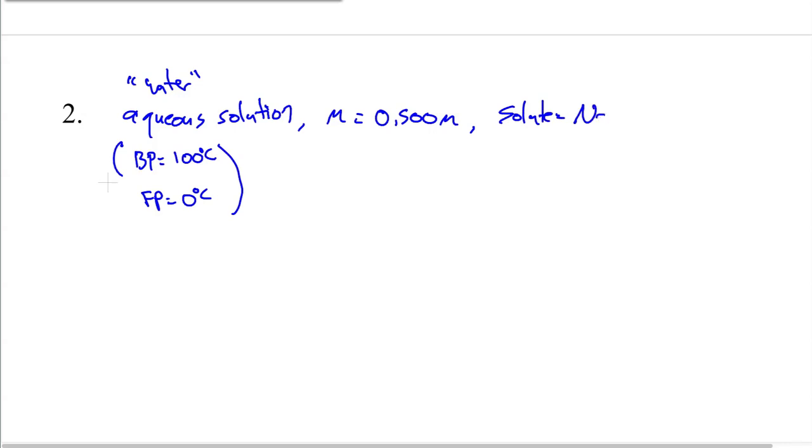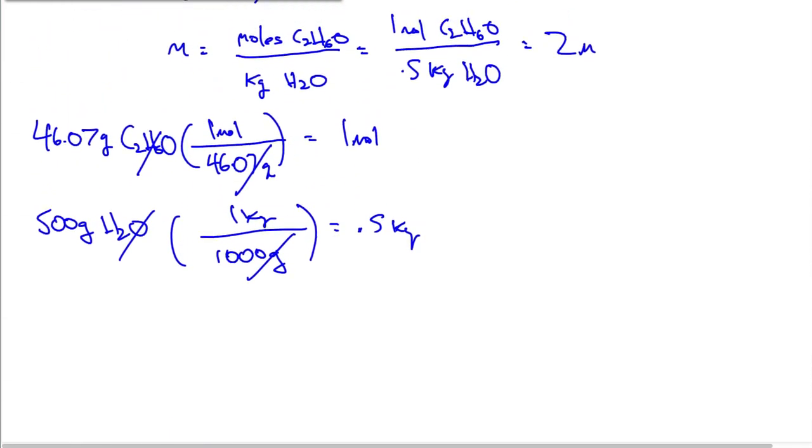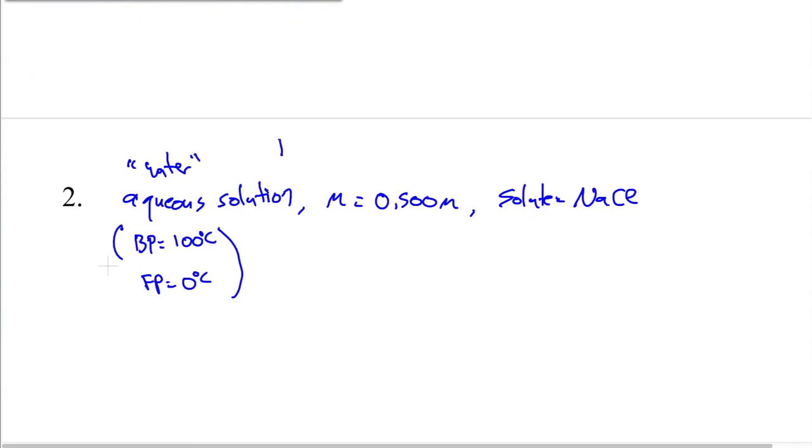Now let's do it the opposite. Let's do a freezing point depression problem. So let's say we have an aqueous solution. Now when I say aqueous, remember, I mean water. So we know that water has a boiling point of 100 degrees Celsius and a freezing point of 0 degrees Celsius. And this solution has a molality, so they're making it easy on you, giving you the molality, not the molarity, but the molality. It's annoying when I say that, so I won't say it again. And the solute equals NaCl.